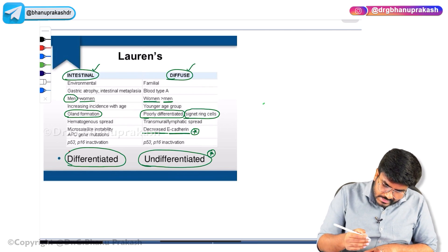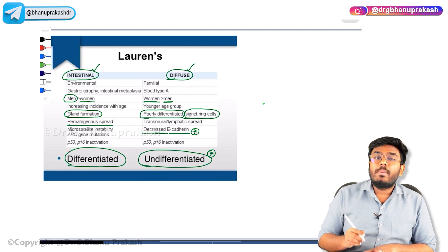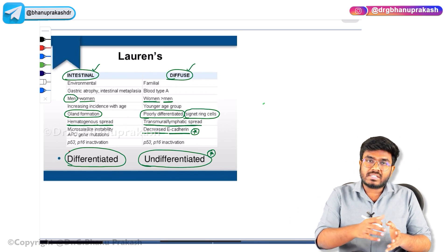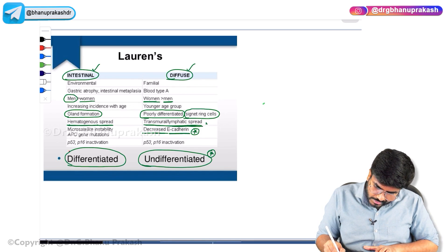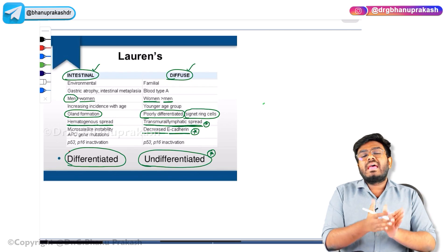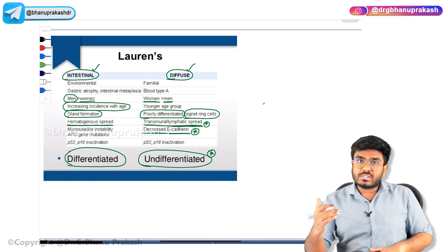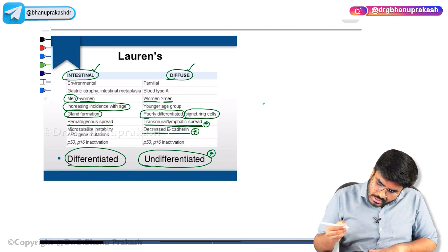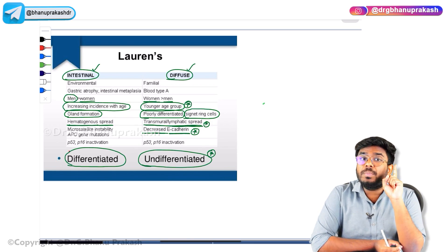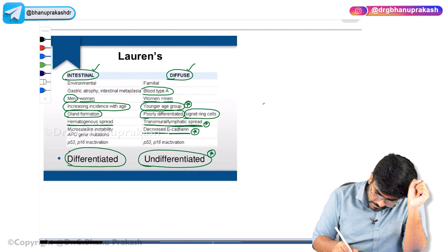Intestinal type spreads via the hematogenous route, while diffuse type spreads via the lymphatic route and transmural spread — going through all layers to surrounding tissues. In older age groups, gastric cancer will most probably be intestinal type. In younger individuals, if they develop gastric adenocarcinoma, it will be diffuse type. Blood group A is associated with diffuse type.